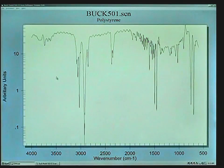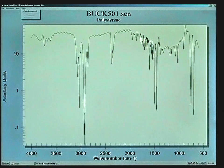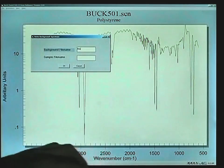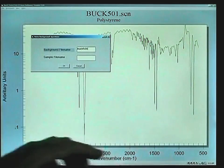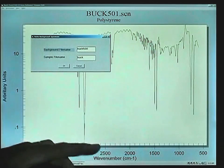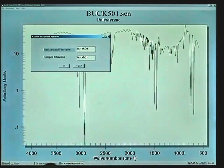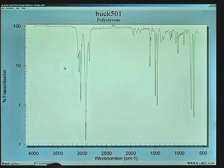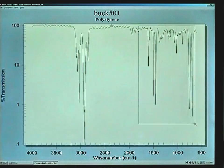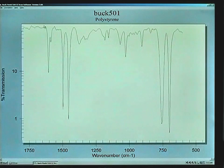With the completed sample single beam spectrum on screen, we can now click on Data, Ratio Background, select the background file name which is Buck 500, our sample file name which is Buck 501, click on OK, and we have our ratio percent transmission scan on screen. We can take advantage of the click and drag zoom feature to expand certain parts of the spectrum.